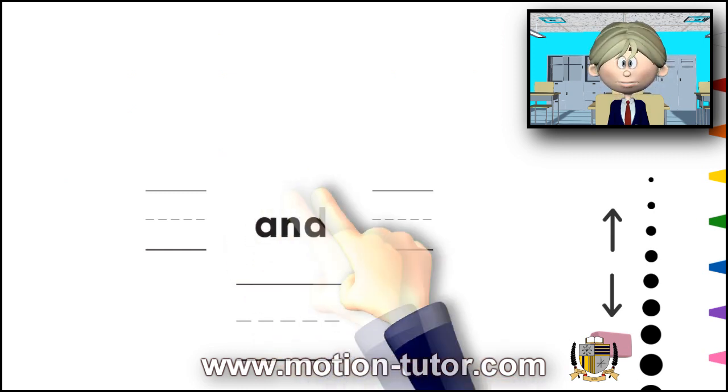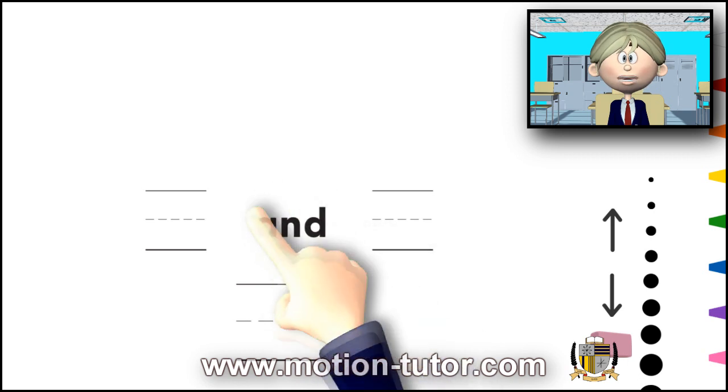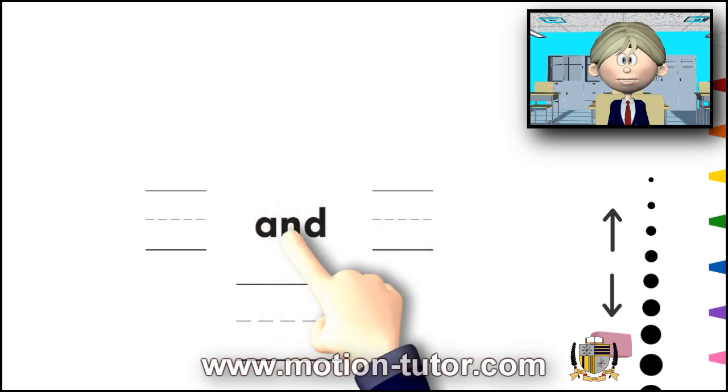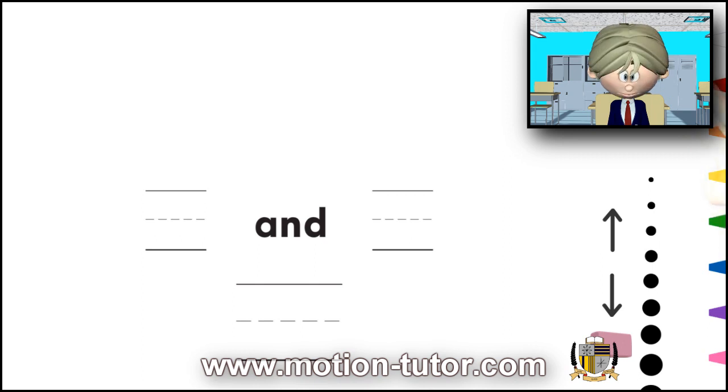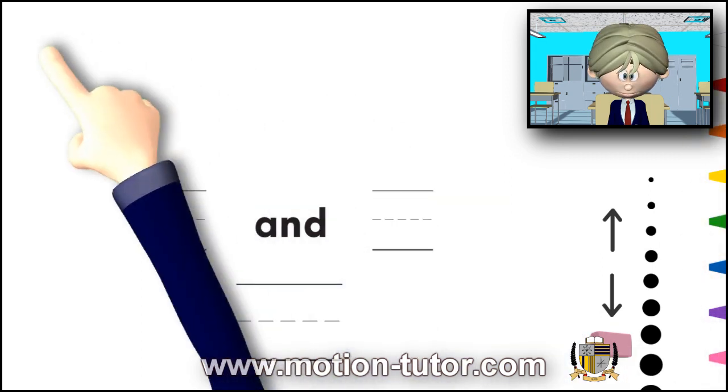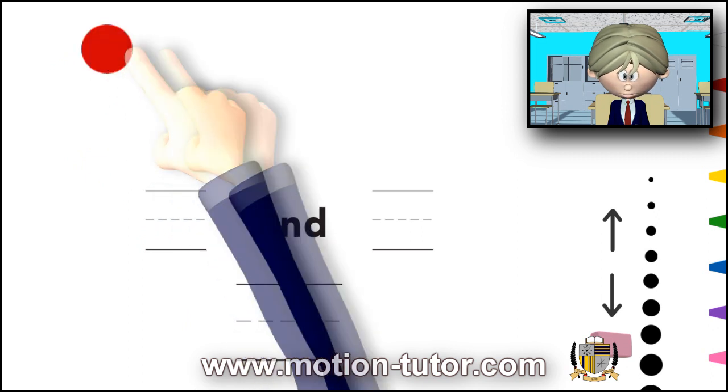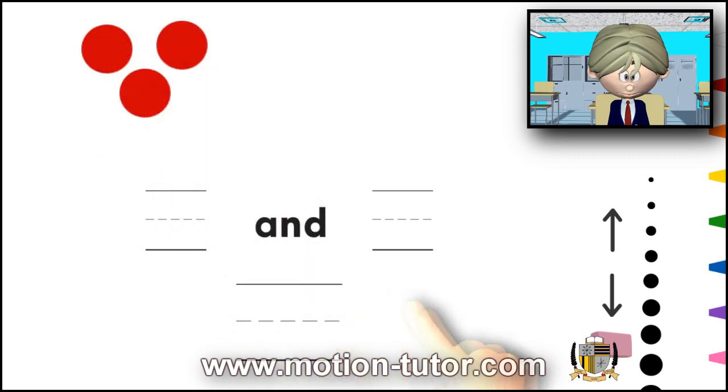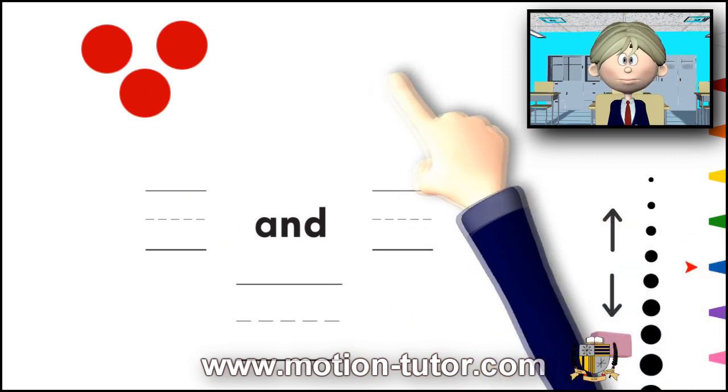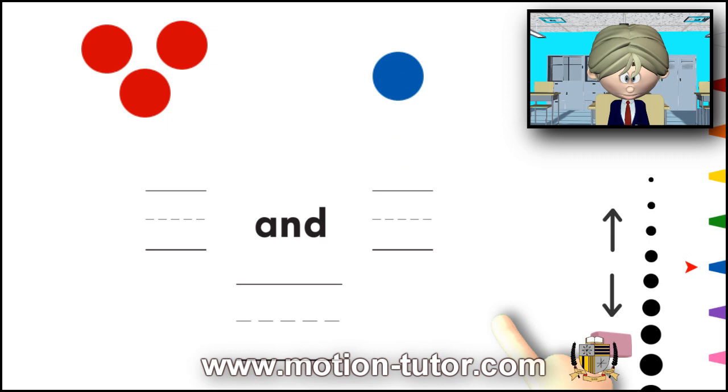So we're learning about this connecting word called AND. And I'll show you what I'm talking about. Let's say, for example, I have 3 reds and 1 blue.